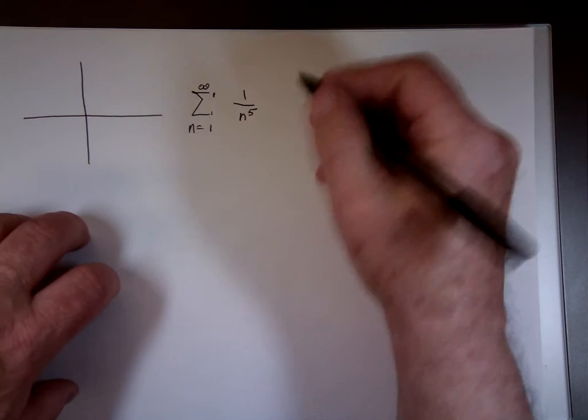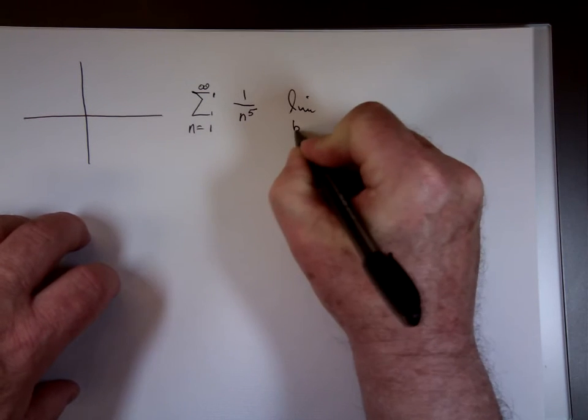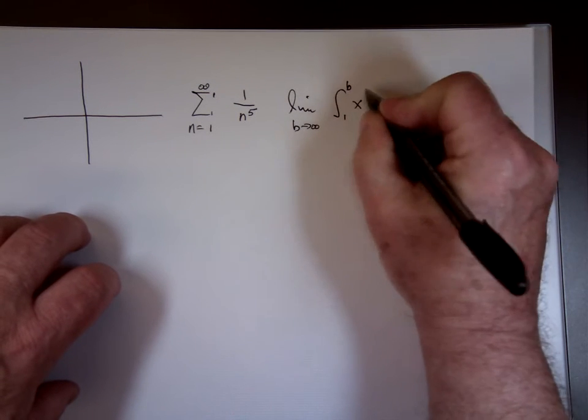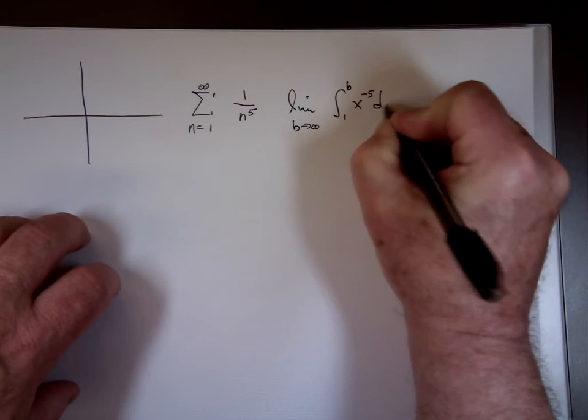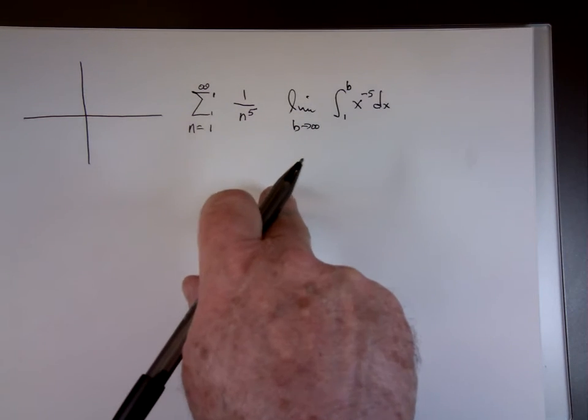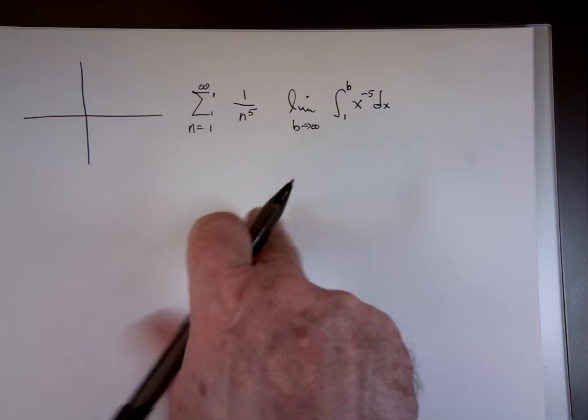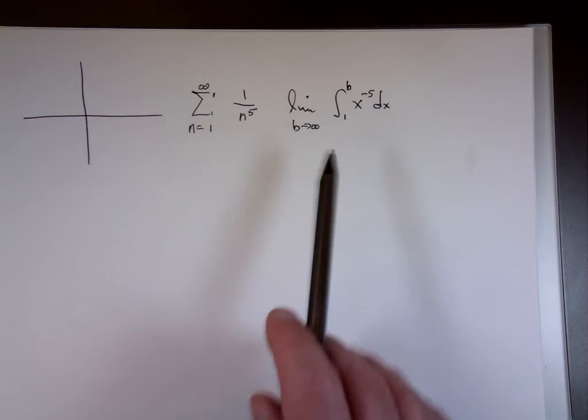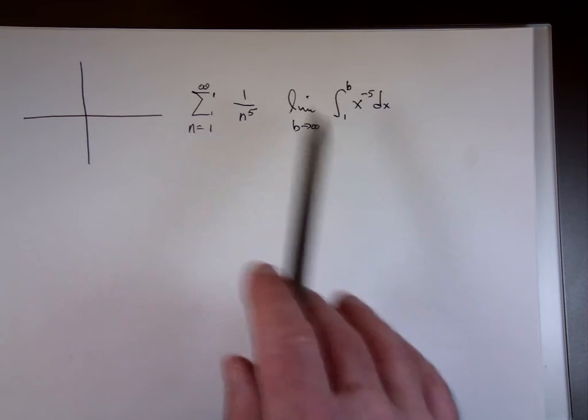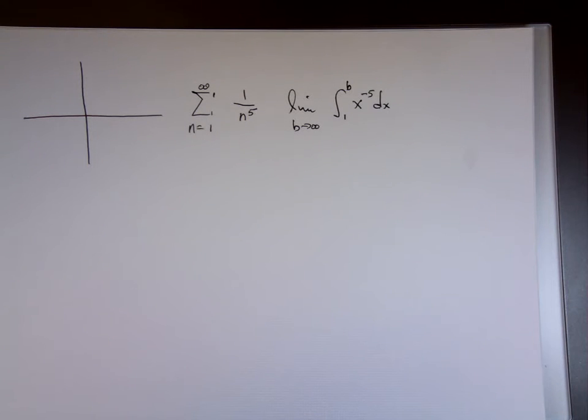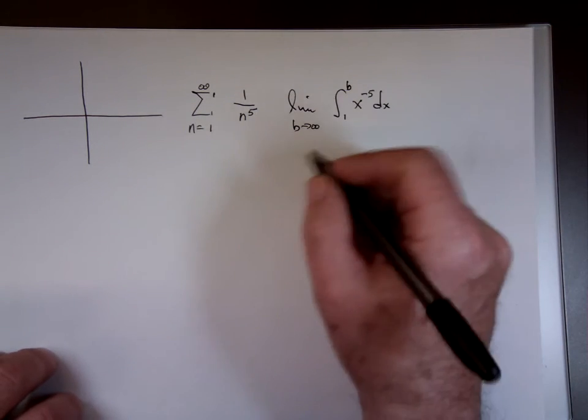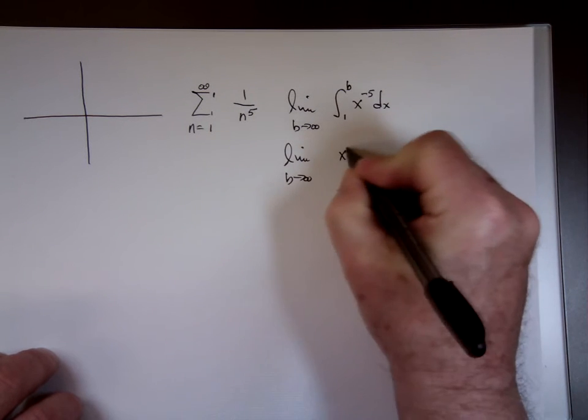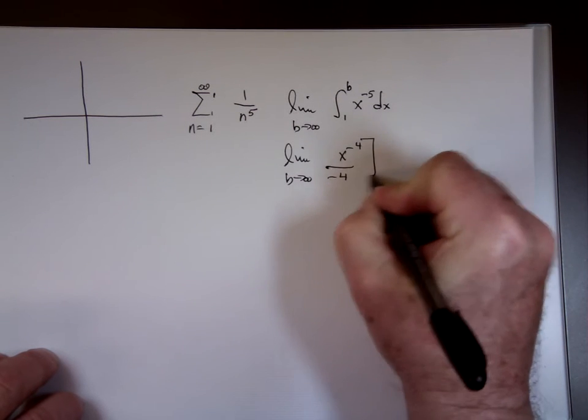So here's the integral test. The integral test says to do the following: take the limit as B goes to infinity from 1 to B of x, 1 over x to the fifth, or x to the negative fifth dx. Is that what you had to do, is write in the integral test? I'm not sure what you had to do, but that would be a logical thing for you to do. This is using the integral test to determine the convergence or divergence of that series.